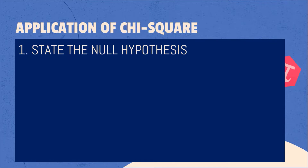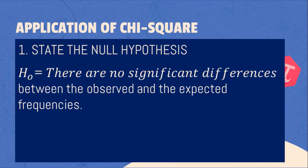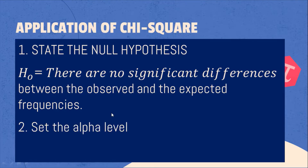The first step: state the null hypothesis. H₀: there are no significant differences between the observed and the expected frequencies. Number two, set the alpha level. We always set the alpha level as 0.05, or 5%, meaning we have a 95% level of confidence.